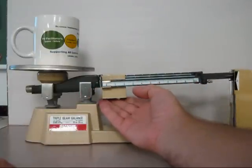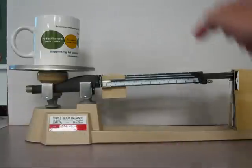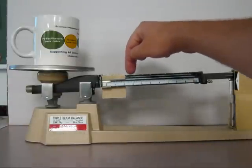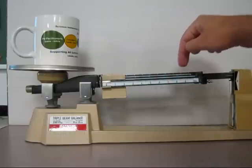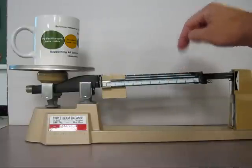The middle beam of my triple beam balance is marked with numbers zero, one hundred, two hundred, three hundred, four hundred, five hundred G. G is for grams.